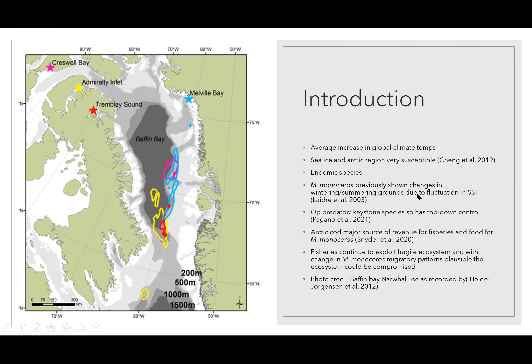As noted, it has shown changes in its wintering and summering grounds due to fluctuations in sea surface temperatures. As a top predator and keystone species, it has great top-down control. The arctic cod, one of its favorite prey items, is also a huge source of revenue for fisheries and food for humans. So changes in normal migratory patterns could have a great effect both on the ecosystem and on us.